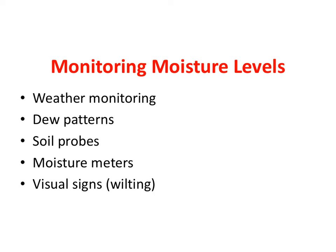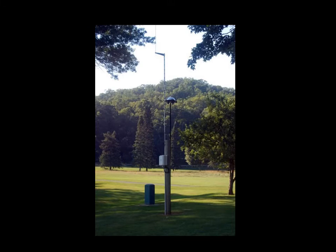Root zone moisture levels can qualitatively be determined by checking dew patterns and using soil probes. Soil moisture levels can also be determined with soil moisture sensing devices, and visual wilting signs can trigger water applications. Modern irrigation systems have the capability to monitor local weather conditions along with turf conditions — wind speed, air humidity and temperature, along with soil temperature and moisture levels — often measured with a device similar to the one shown.